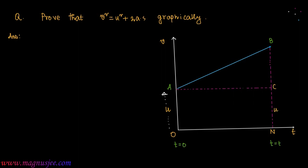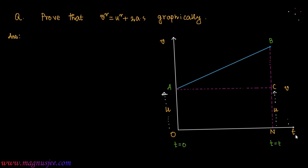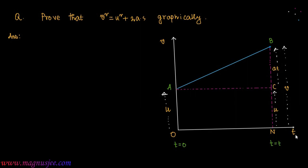u is also equal to NC, the initial velocity of the body. We denote the final velocity v, so v = NB, which is the final velocity at point B. The remaining portion CB equals at, since u + at = v, and AB is the velocity-time graph.